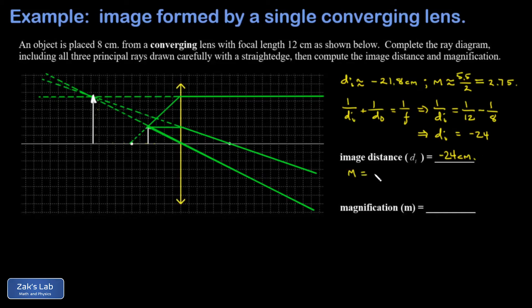Then we look at the magnification. That's negative DI over DO. That gives me a negative of negative 24, so positive 24 over DO, which was 8, and I get exactly 3 for the magnification. So again, the agreement between our ray diagram approximation and what we get from the equations is not perfect, but that ray diagram helps us to approximate the answer.